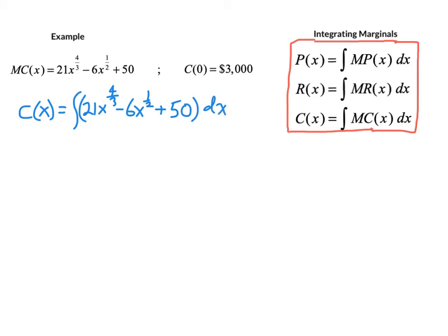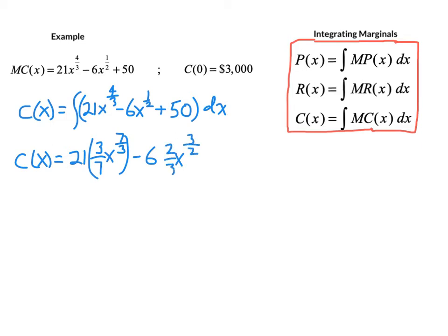We can do this by power rule, being careful with the rational exponents. By the constant multiple rule, x to the 4/3 becomes x to the 7/3, and we multiply 21 by the reciprocal 3/7, giving 21 × (3/7) x to the 7/3. Similarly, 6 times x to the 3/2 is multiplied by 2/3. And by the constant rule, we get plus 50x, plus the arbitrary constant at the end.